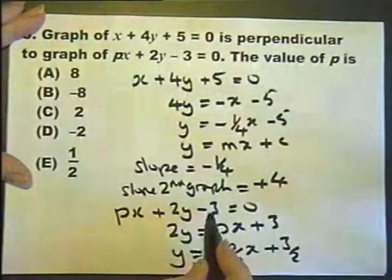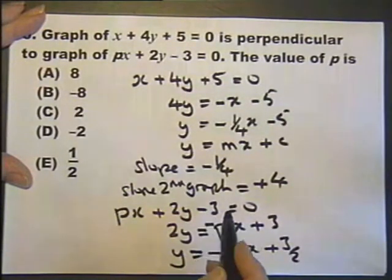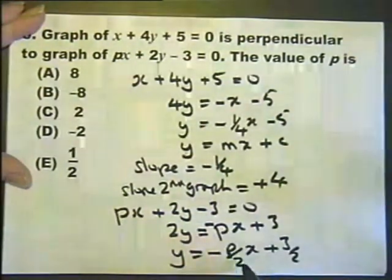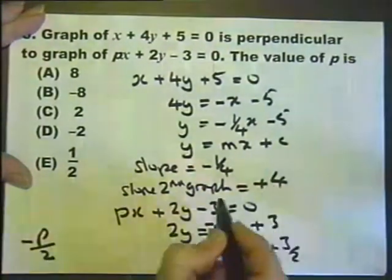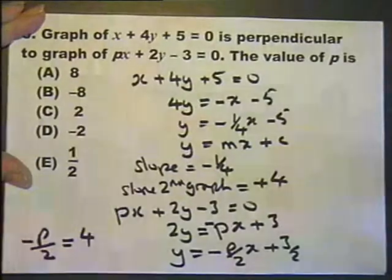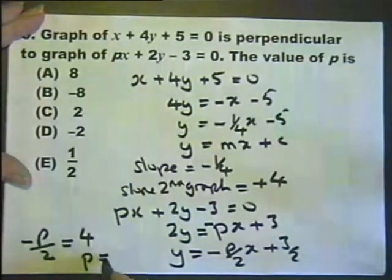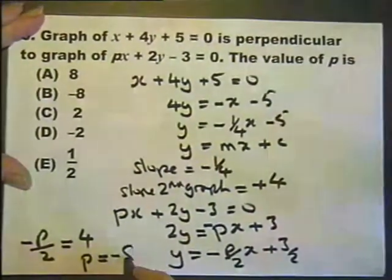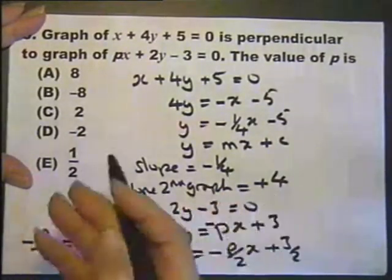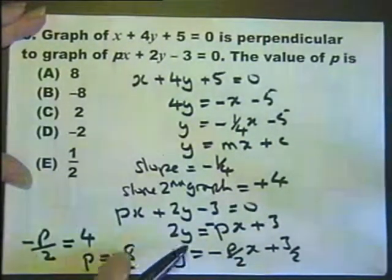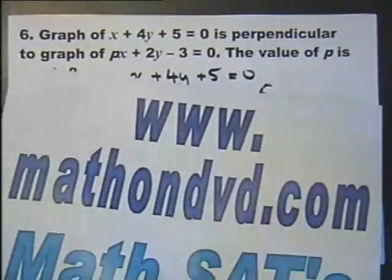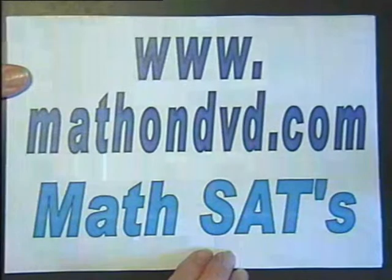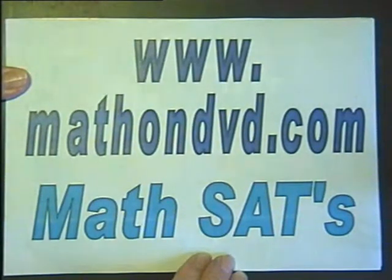So this graph has a gradient of minus P over 2. In other words, minus P over 2 has to equal 4. If I multiply both sides by 2 and then change the sign, I'll get minus 8. So for all of that to happen, the value of P has to be minus 8. The answer to Question 6 is B. For full details on all the available math DVDs, please visit MathOnDVD.com.